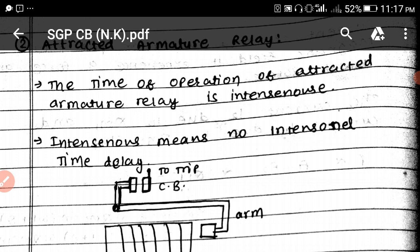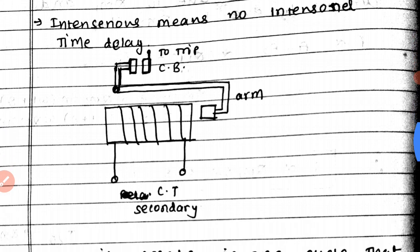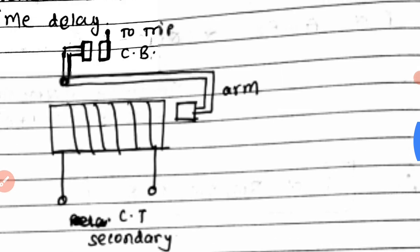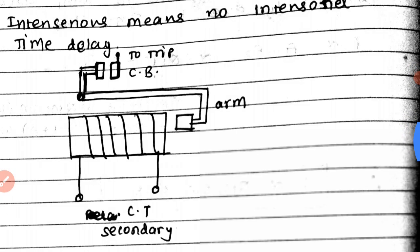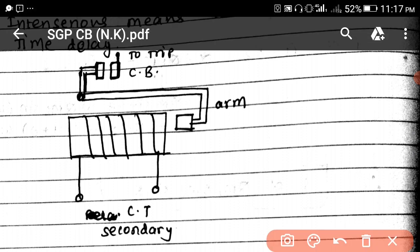Now I'm going to explain the construction of the attracted armature relay. This is the figure of the attracted armature relay. Now we are going to explain how it works. Assume that this is a transmission line and in the transmission line we attach one relay to it.